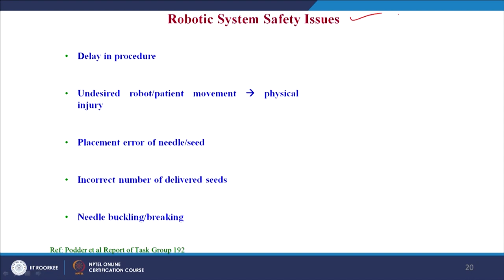Now coming to the safety issues associated with robotic systems: delay in procedure, undesired movement of the robotic system disturbing or harming patients or clinical staff, anatomical movement of the patient damaging instrumentation, placement error of the needle or seed, incorrect number of delivered seeds, and finally needle buckling or breaking — needle buckling being the strong bending of the needle with sharp edge or breakage. These are the safety issues encountered in robot-assisted percutaneous needling interventions.